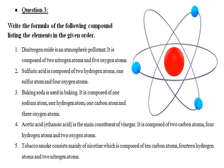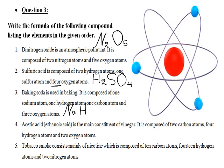Question 3: Write the formula of the following compounds. Nitrogen oxide (atmospheric pollutant) — composed of 2 nitrogen and 5 oxygen atoms: N₂O₅. Sulfuric acid — 2 hydrogen, 1 sulfur, 4 oxygen: H₂SO₄. Baking soda — 1 sodium (Na), 1 hydrogen (H), 1 carbon (C), 3 oxygen atoms: NaHCO₃.